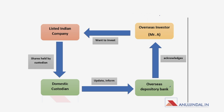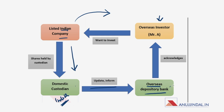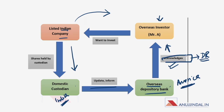The circular flow starts from the overseas investor, Mr. A. An American investor wants to invest in an Indian company. The Indian company gives shares to a domestic custodian situated in India. This domestic custodian informs the overseas depository bank situated in the investor's country, America. The overseas depository bank then acknowledges Mr. A with a depository receipt of that Indian company. These are just like shares but issued abroad through a depository bank and can be traded on stock exchanges.